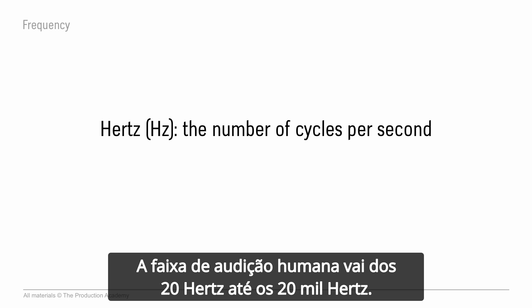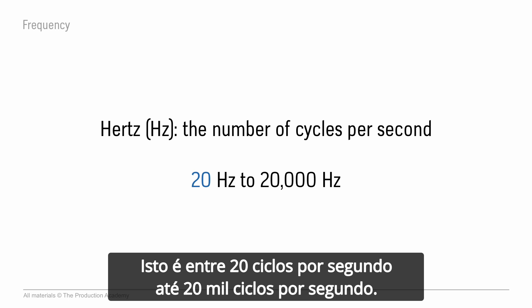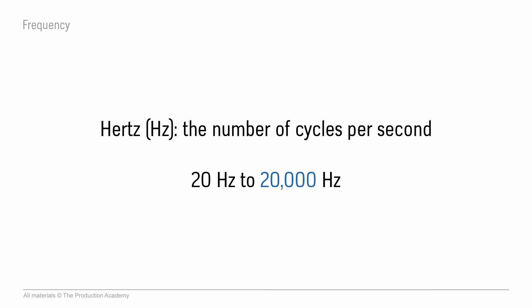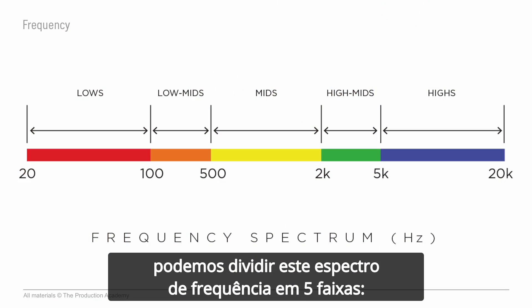The range of human hearing is approximately 20 hertz to 20,000 hertz — that's 20 cycles per second all the way to 20,000 cycles per second. When we're talking about music, we can split this frequency spectrum into five ranges.